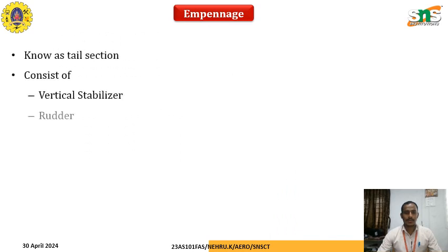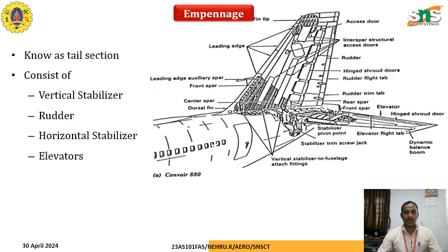The empennage, known as the tail section, consists of a vertical stabilizer and horizontal stabilizer. The vertical stabilizer has the rudder as its control component, and the horizontal stabilizer has the elevator. Other components include the tip, fin, access door, and interspar structural access door for structural repair. The rudder and rudder flight tab trim the rudder position, and there is also a trim tab on the elevator. Elevator flight tabs help balance the aircraft in dynamic conditions. The vertical stabilizer and fuselage are attached in the fairing region, and the dorsal fin provides aerodynamic balancing.